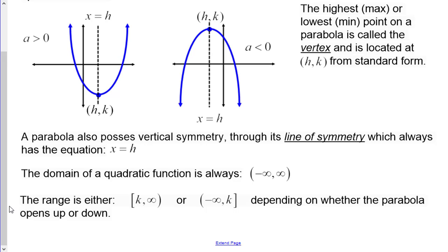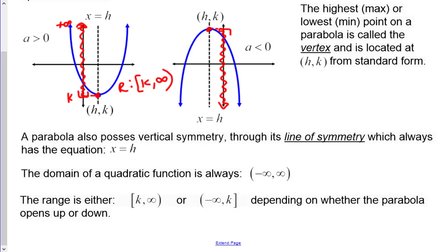A helpful way to think about domain and range is to imagine the graph being smashed against the x or y axis. For a parabola opening upward, the range starts at k and goes to positive infinity. For one opening downward, the range goes from negative infinity up to k. It always depends on the y-coordinate of the vertex.